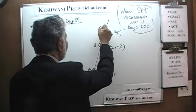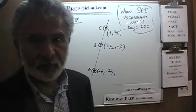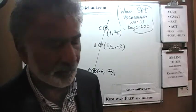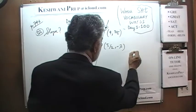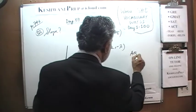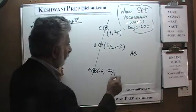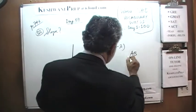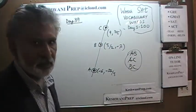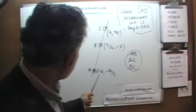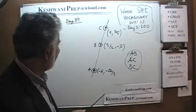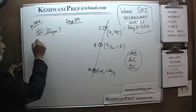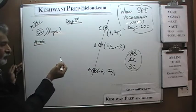Since there are three points here, we have three different choices as to how we can go about measuring the slope of this line. We can either go from A to B, we can use these two points, or we can go from A to C, or we can go from B to C. Any one of these three should do the job. Let's just go from A to B. So, going from A to B, we are looking for slope.